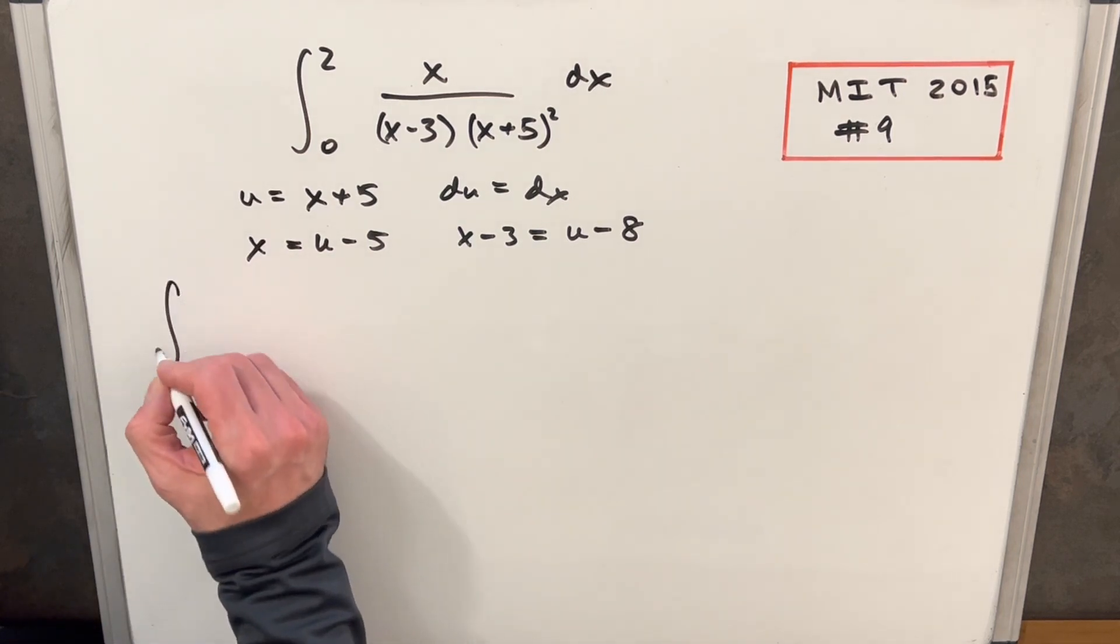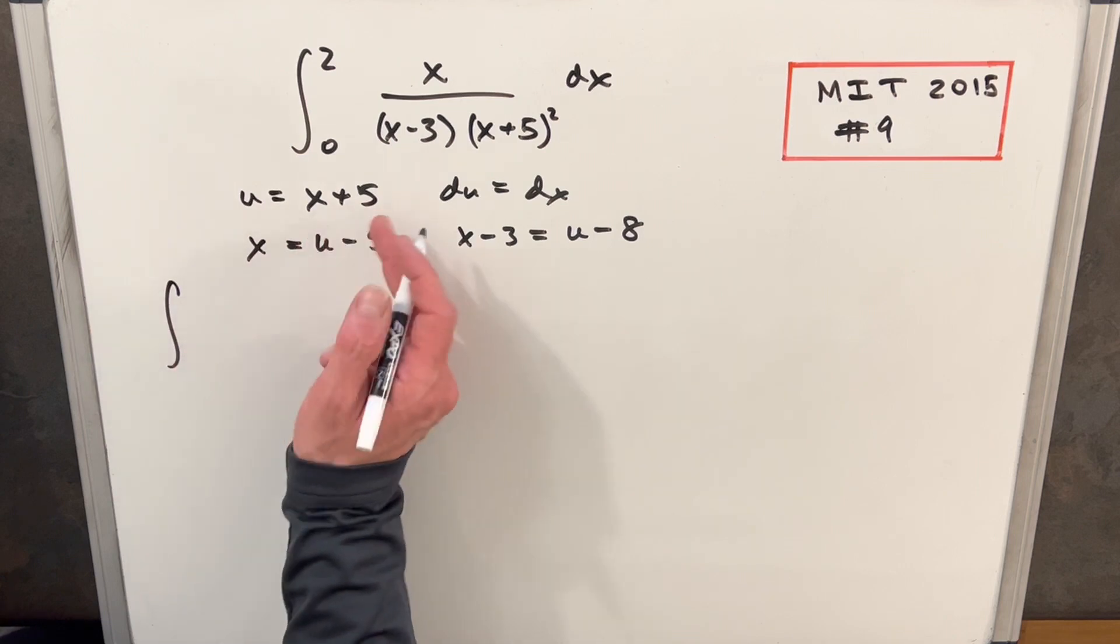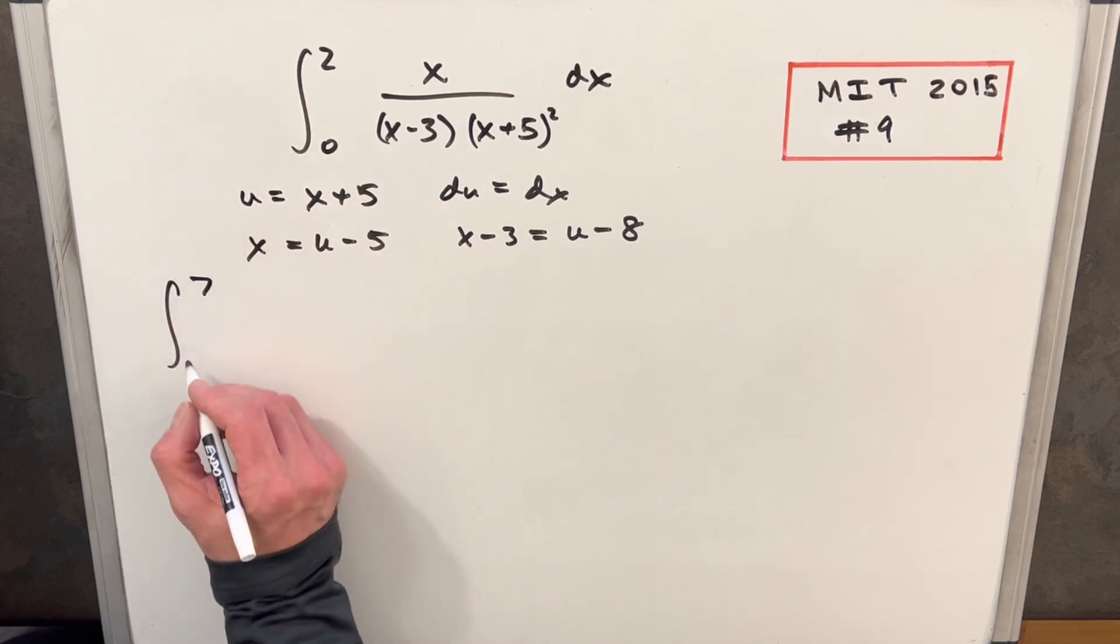So now I'll make the substitution. I'll just update my bounds. So for two, we'll plug that in here. We're going to have two plus five, seven. And then at zero, our u is going to become five.